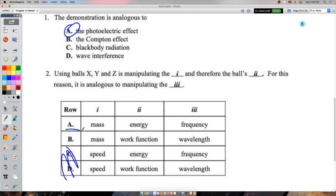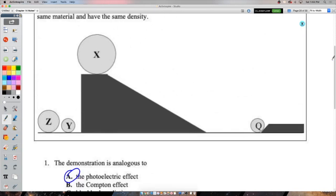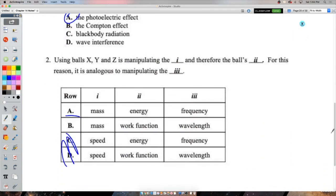For this reason, it is analogous to manipulating the, so now in the photoelectric effect, what are we manipulating when a photon has more energy? Because the balls are like photons here. Well, to give a photon more energy, we have to give it a higher frequency. Threshold frequency we have to meet. So we can think of the balls as having a threshold mass. And if they're above that threshold mass, they will knock Q up onto the platform. If they are below it, like maybe Y is, they will definitely never do that. So the mass here is analogous to the frequency of the photon.